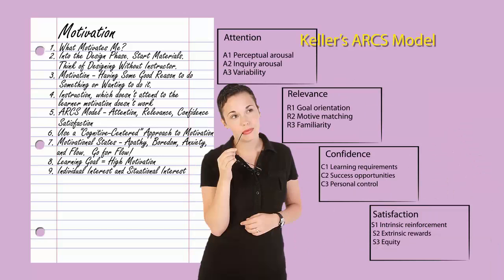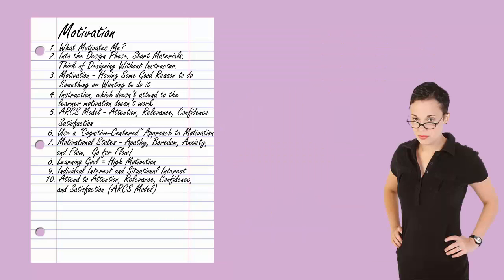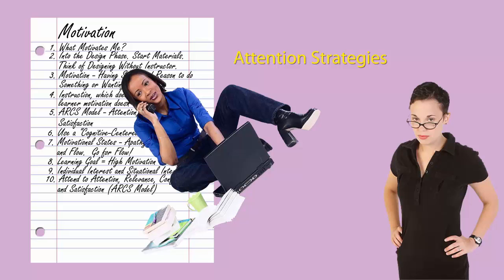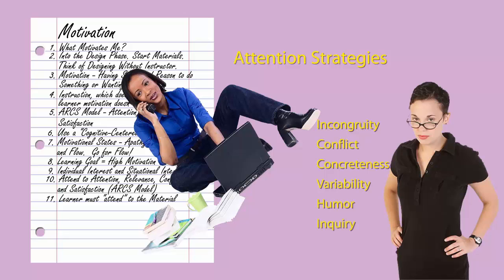Returning to John Keller's ARCS model, Keller suggested that for learning to take place, the learner must attend to the material. Strategies for getting attention on the part of the learner include incongruity and conflict, concreteness, variability, humor, inquiry, and participation.